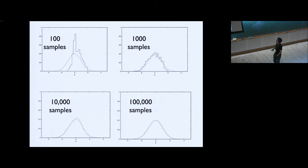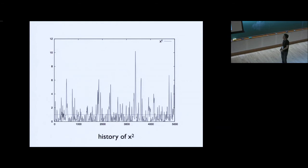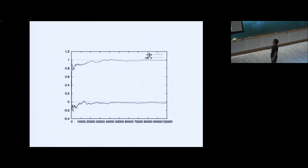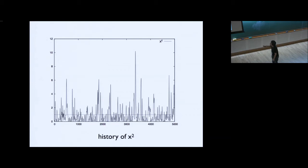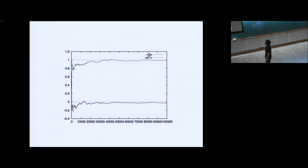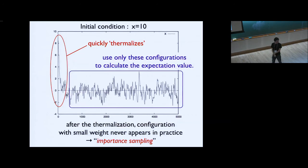The same holds for more complicated functions or higher dimensions — this is why we can use this algorithm for generic actions. If we plot x-squared as a function of Monte Carlo time, we get fluctuations around the average value of 1. The average of x-squared gradually converges to 1, and the average of x converges to 0, though it needs more samples to converge. If we start at x=10 — which is too big and doesn't contribute to the integral — the value quickly comes close to the important region around 0 and starts to oscillate there. We can remove such early configurations and only use the thermalized ones.